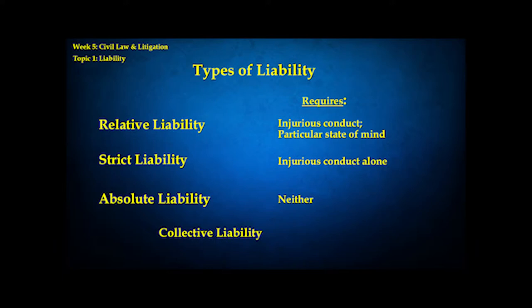Strict liability is a broader standard because it does not require any particular state of mind. All that it requires is that the conduct resulted in an injury — it can be completely accidental. For example, you see these warnings on products in stores, like a curling iron saying 'do not insert this into any orifice,' or a microwave that says 'do not dry your pets in the microwave.' Those warning stickers are there because somebody probably did that thing no reasonable person would have thought to do with the product and injured themselves. Even though the manufacturer was not negligent and could not have reasonably foreseen it, they're still held responsible — that's why they put these warning labels on things.